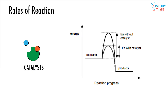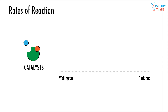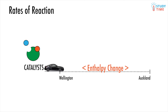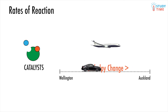Imagine the reactants turning into the products is a bit like you needing to travel from Wellington to Auckland, and the total enthalpy change is a bit like the total distance that you travel, or for you physicists out there, displacement. Bear with me here. Now think about the difference between driving all the way up there and just taking a plane. They both cover the same distance, but one way is much faster than the other.